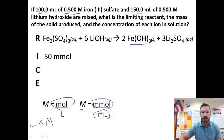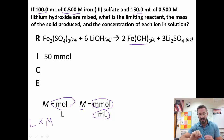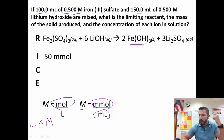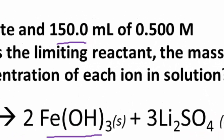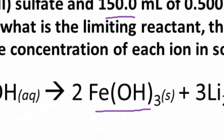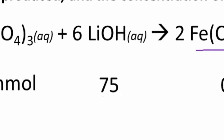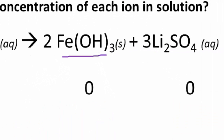In a RICE table, all units are the same, so we only need to write them once — the whole table will be in millimoles. Now for lithium hydroxide: 150 mL times 0.5 gives us 75 millimoles. There's zero iron(III) hydroxide and zero lithium sulfate to start with, because those haven't been produced yet. So we put zero for both products.